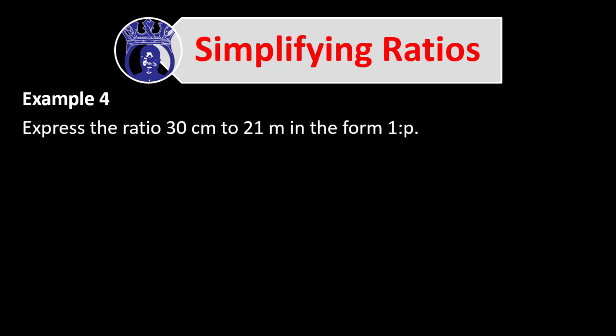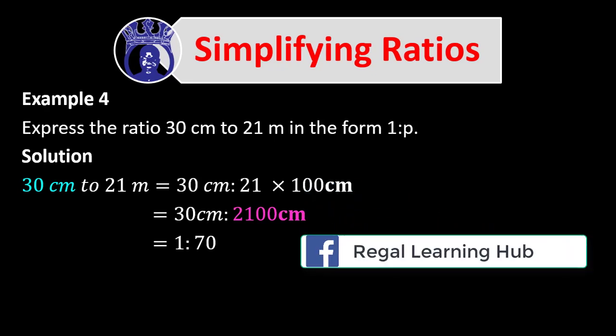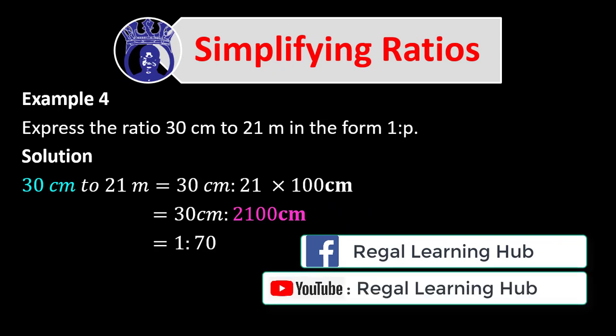Example 4: Express the ratio 30 centimeters to 21 meters in the form 1 to P. Solution: 30 centimeters to 21 meters equals 30 centimeters to 2100 centimeters, since 1 meter equals 100 centimeters. Dividing both parts by 30 gives 1 to 70. So the simplest form is 1 to 70, and we have written this ratio in the form 1 to P, where P equals 70.